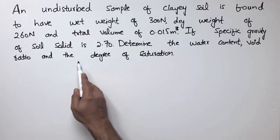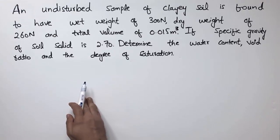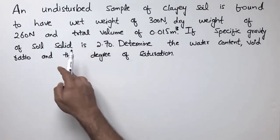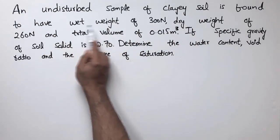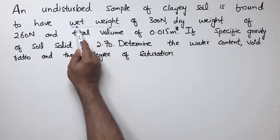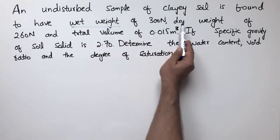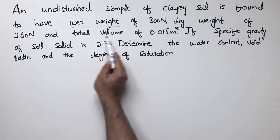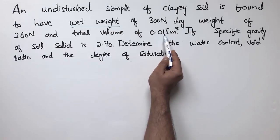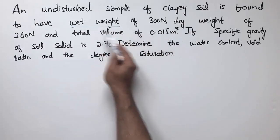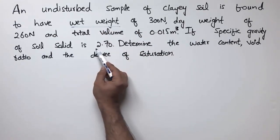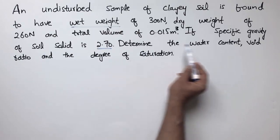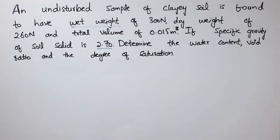Some known parameters are given to us and we are going to find some unknown parameters. The problem statement is: an undisturbed sample of clay soil is found to have a wet weight of 300 Newton, a dry weight of 260 Newton, and a total volume of 0.015 cubic meters. If the specific gravity of soil solid is 2.70...